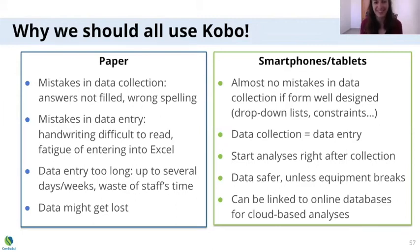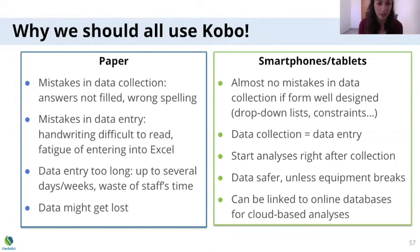If you're not convinced yet, let me remind you of some advantages of using Kobo. On paper, you can have so many mistakes in data collection — wrong spelling, mistakes in data entry because it's hard to read handwriting, and you're just so tired after hours of typing data into Excel. It's too long and just wastes the time of WCS agents who could spend that time in much better ways, and data can get lost quite easily.